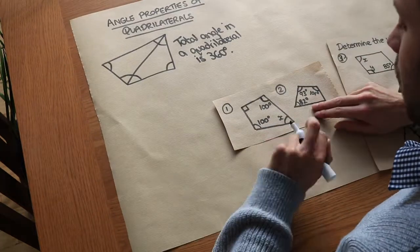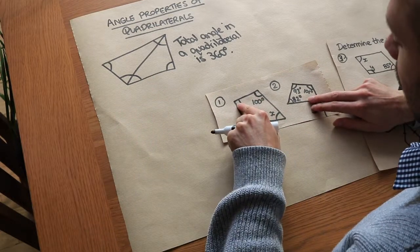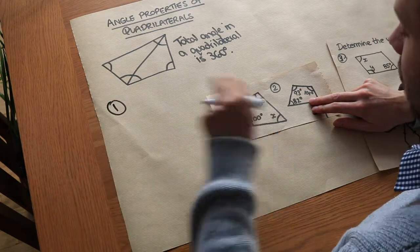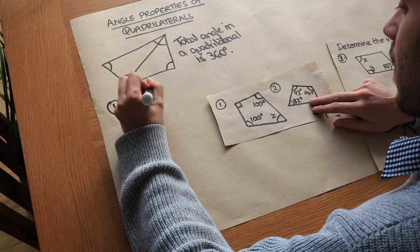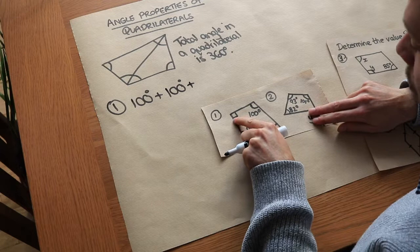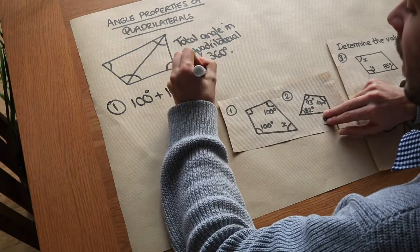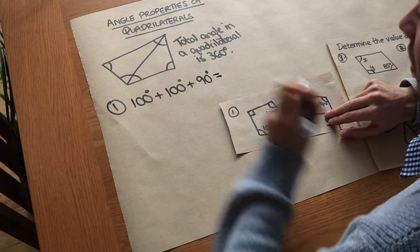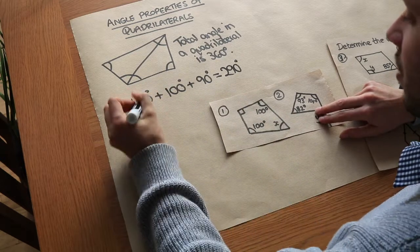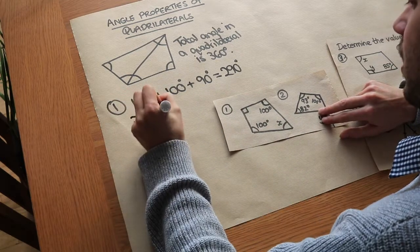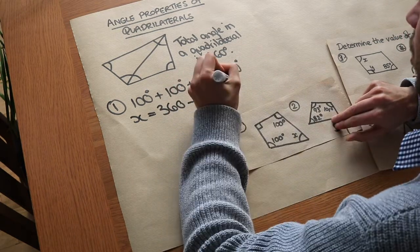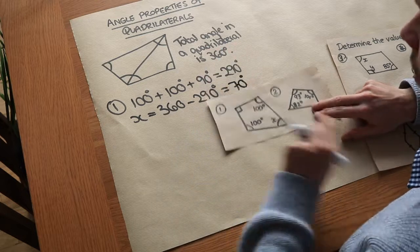Let's use that to solve two problems. We know the four angles add up to 360 degrees and we want to find the missing angle. We add the three known angles: 100 plus 100 plus 90 (the square symbol indicates a right angle) gives 290 degrees. So we do 360 minus 290, which gives the remaining angle of 70 degrees. So x is 70 degrees.